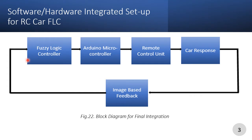This block diagram represents the logical sequence of the final integrated setup of the fuzzy logic controller for the RC car. First, we studied the model response of the car by measuring its response in terms of direction and distance covered at varying voltage levels. Then we designed a Mamdani type FIS in MATLAB based on this response, which takes the distance between the RC car and its desired final position as input. This distance input is provided by our image-based feedback algorithm. Once this is fed to the fuzzy logic controller, it returns a time output which specifies the duration of the final output for the car.